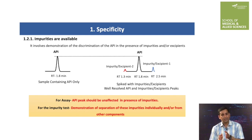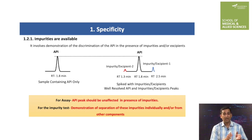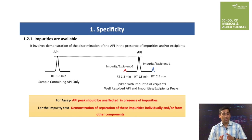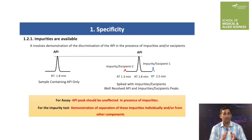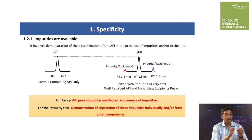The second HPLC run is performed after spiking the API sample with impurities or excipients under identical chromatographic conditions. The resulting chromatogram must show a well-resolved and unaffected API peak along with peaks of impurities and excipients. It is always good to have a prominent API peak compared to peaks of impurities. Two types of data can be submitted: one for assay and another for impurity test. For assay, the API peak should be unaffected in the presence of impurities. For impurity testing, the analyst must demonstrate separation of the peaks of impurities individually and/or from the API.